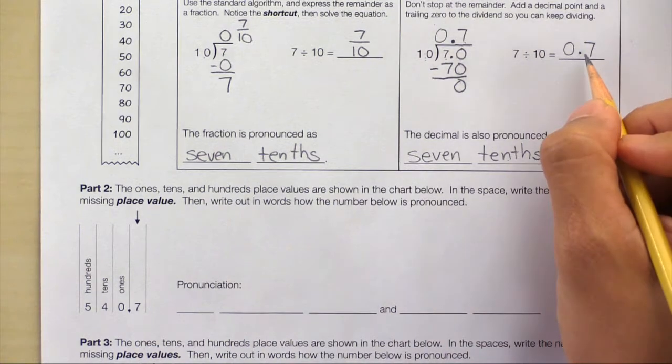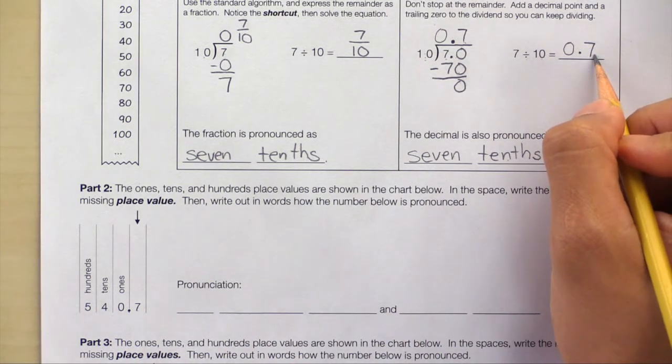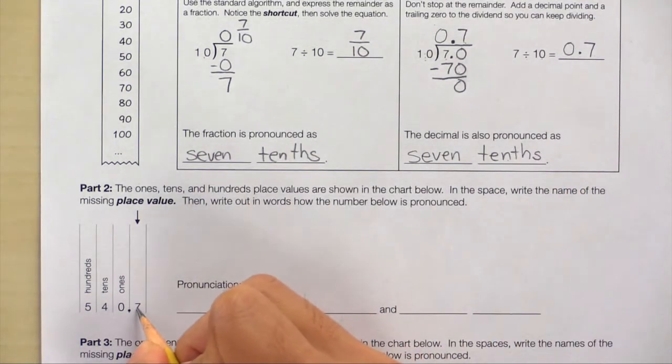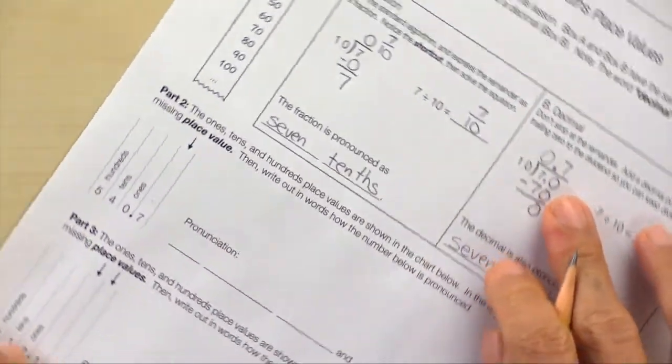And as you can see here, 0.7 is pronounced 7 tenths. So that means the 7 is in the tenths place value. Let's go ahead and write that down.